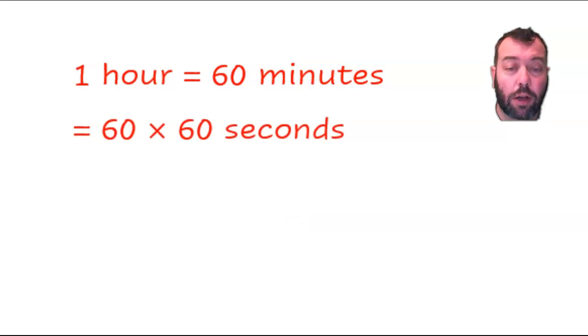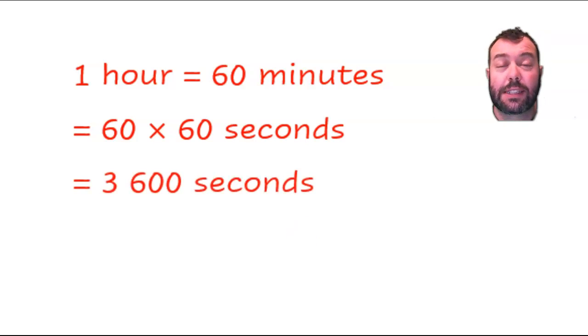Right, that's 3,600 seconds. 3,600 seconds in an hour. So now we've done two of those three parts: we converted the kilometres to metres, we've converted the hours to seconds. Now to simplify that rate, it's the number of metres, 72,000, divided by the number of seconds, 3,600.